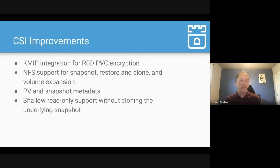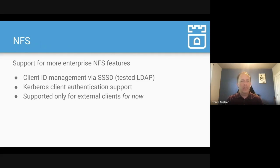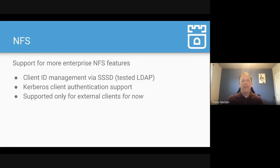CSI improvements in the 1.10 release include: KMIP integration for encrypting RBD block storage volumes; NFS support for snapshots, restore, clone, and volume expansion; PV and snapshot metadata attached to PVs; and shallow read-only support without cloning the underlying snapshot. NFS has also been a focus area, adding enterprise NFS features like client ID management via SSSD with LDAP and Kerberos client authentication support for external clients.